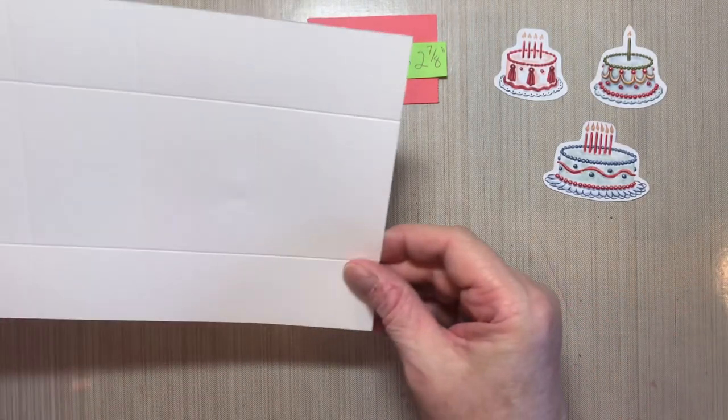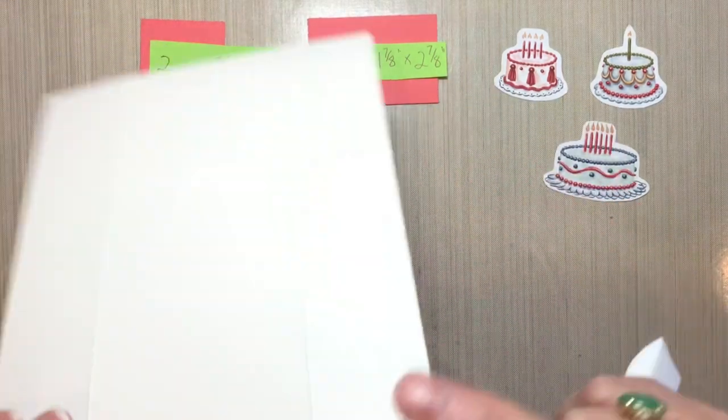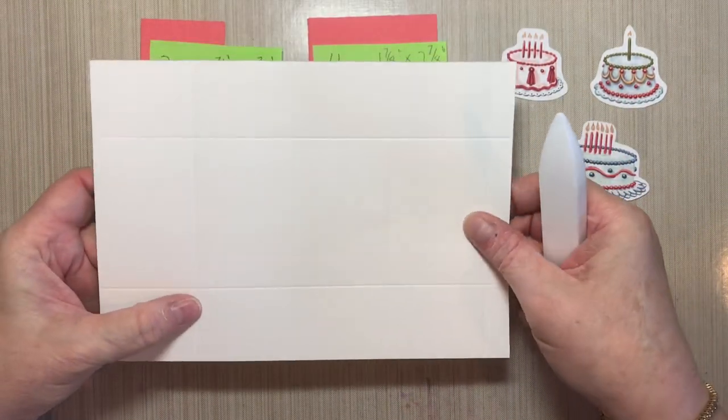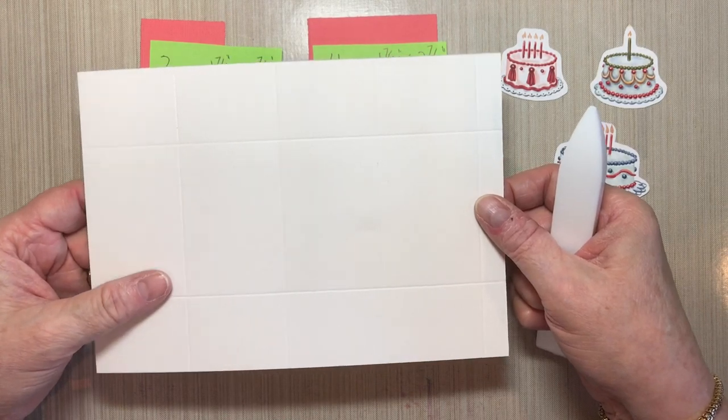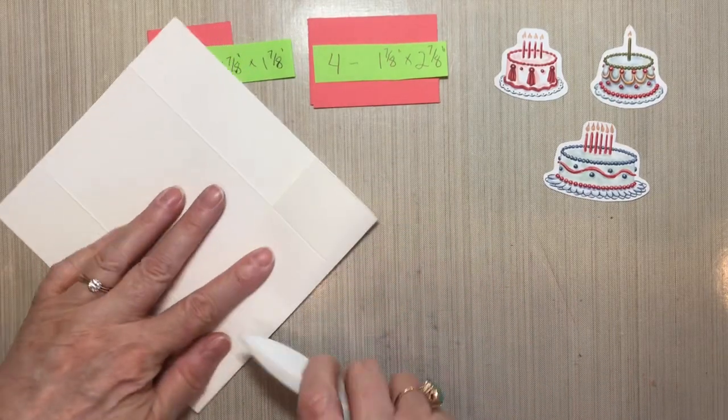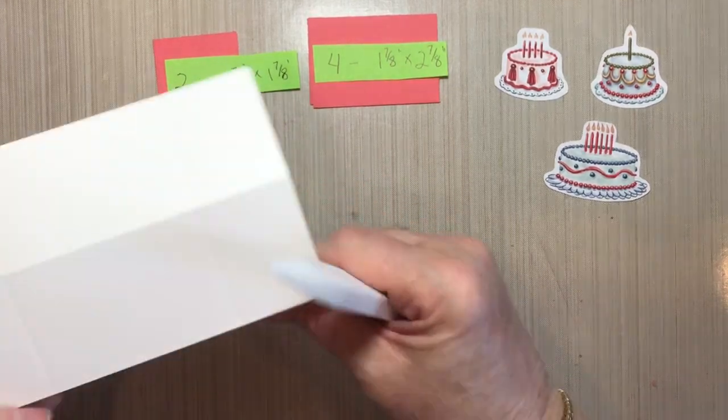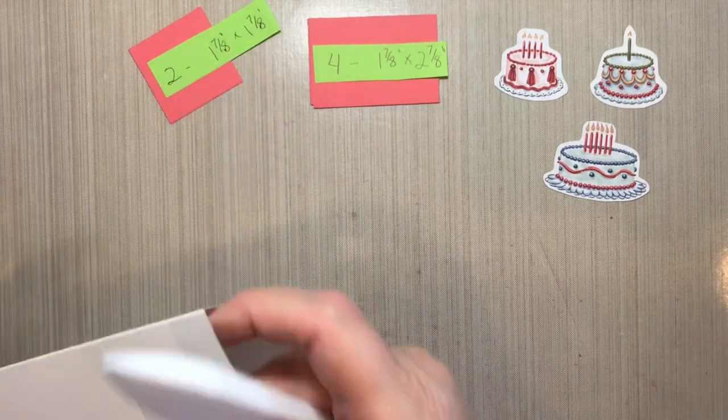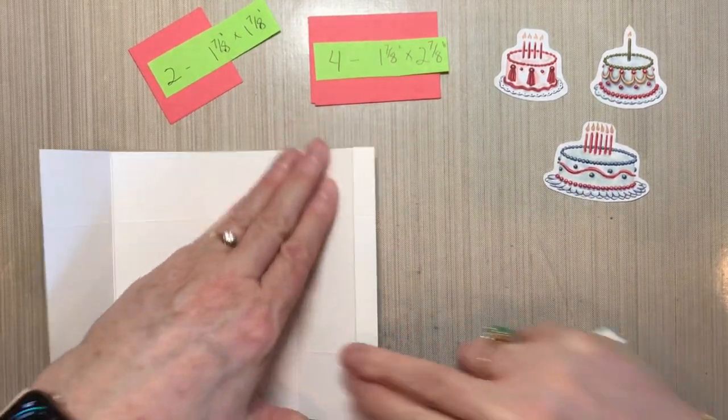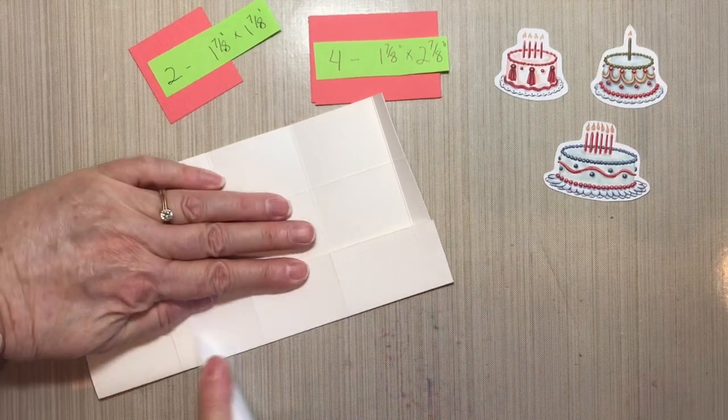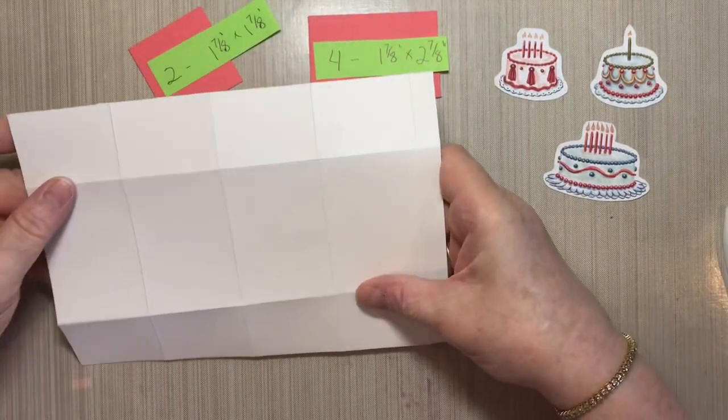Alright, the next thing that you need to do is crease along the score lines. And from here on, I'm going to be working on the 6x8.5 sheet of paper, but it is the same for the 5.5x8.5 paper now that you've set all the score lines. Alright, you have to crease all of the score lines. And this last one then. And you have this.